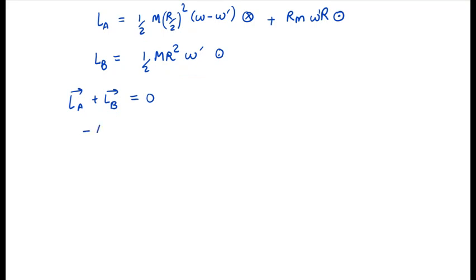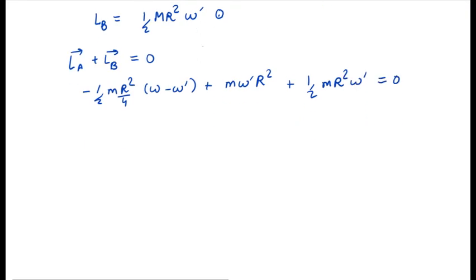So half m r squared by 4 times omega minus omega prime plus m omega prime r squared plus half m r squared omega prime is equal to 0. And we are getting omega by 8 is equal to 13 omega prime divided by 8. This means omega prime is equal to omega by 13. So 13 should be the final answer.